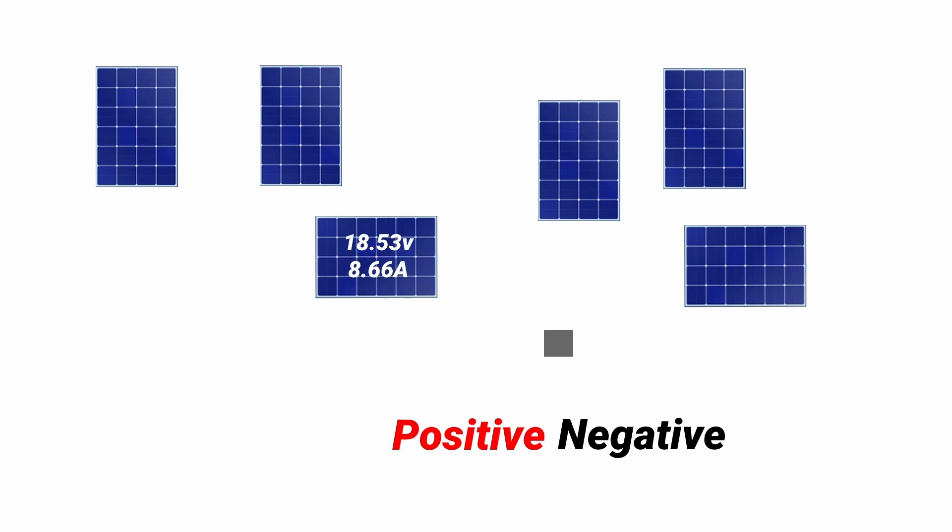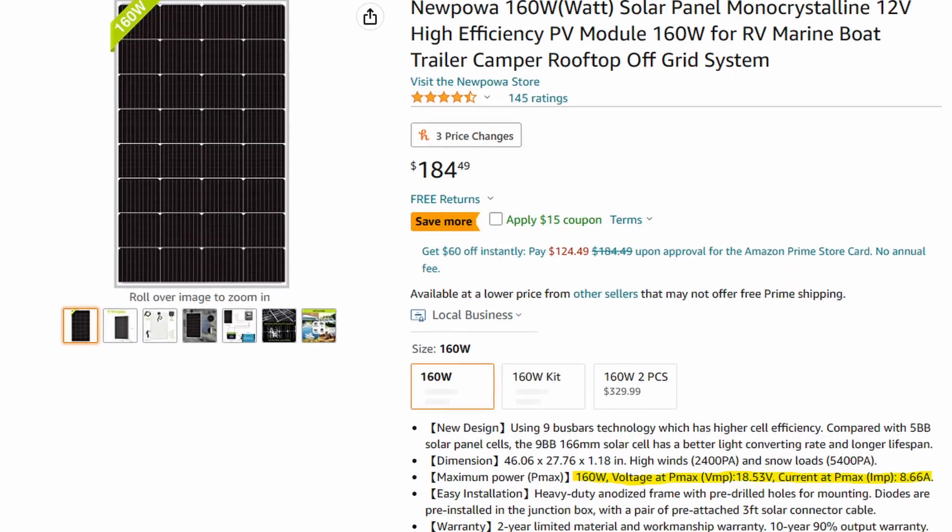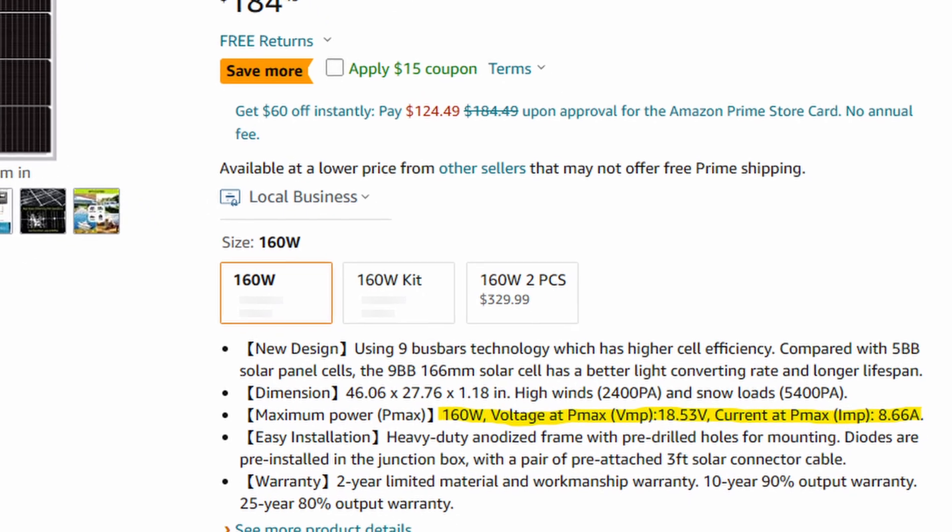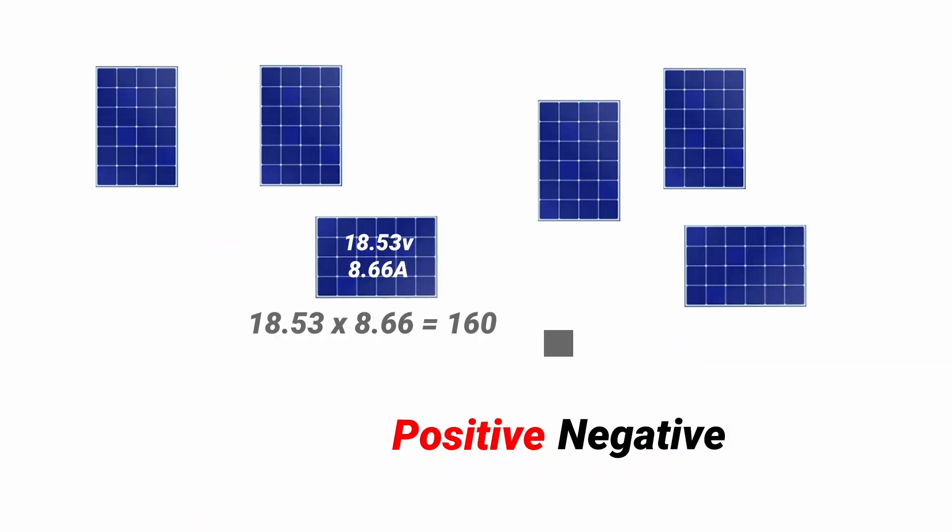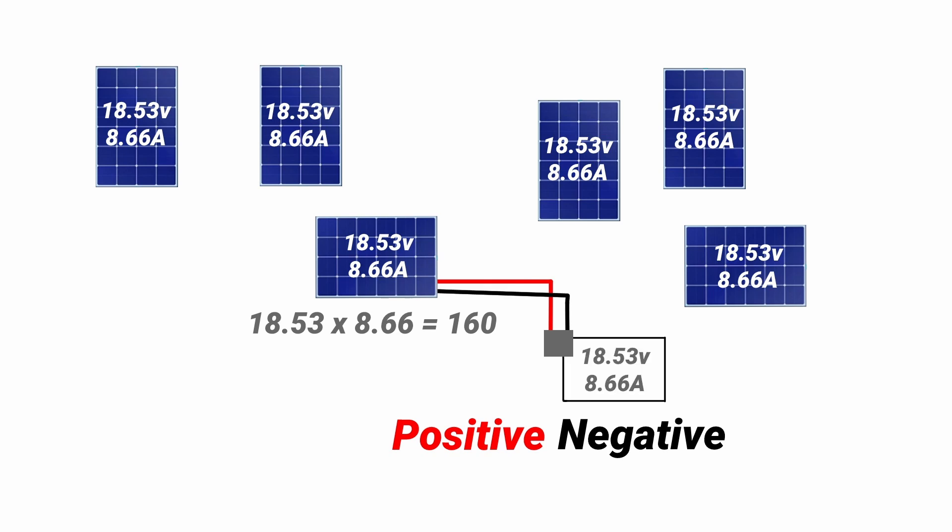These 160 watt panels have a voltage of 18.53 and an amp rating of 8.66. You can usually find these ratings in the description of the panels. If you times 18.53 by 8.66 you get 160 which is the watt rating for the panels. From the wire gland we have a positive wire shown as red and a negative wire shown as black.